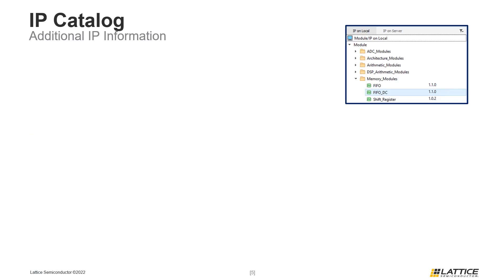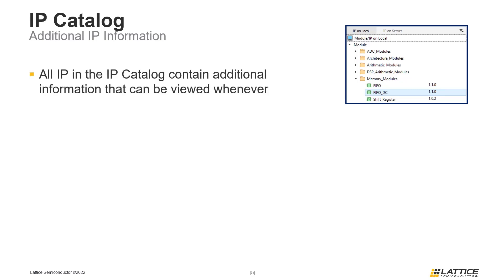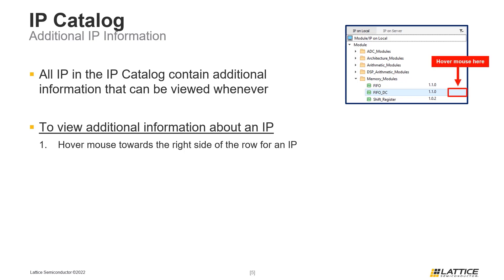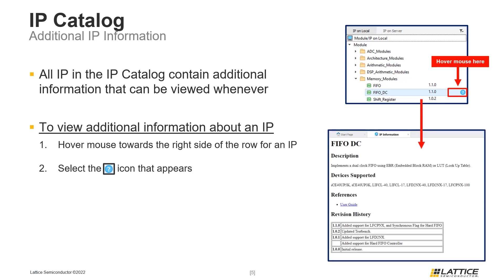One useful feature of the IP packages in Radiant's IP Catalog is that users can view additional information about an IP package at any time. To do so, users should hover their mouse in the row of the IP they want to know more about, as can be seen in the figure on the slide. Once users have done so, a blue question mark icon will appear in the row for that IP package. Clicking that icon will open an additional IP information window with detailed information about the selected IP. This method works for IP in both of the IP Catalog's tabs.